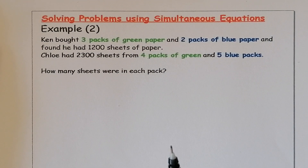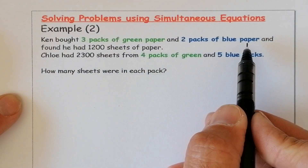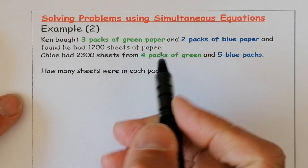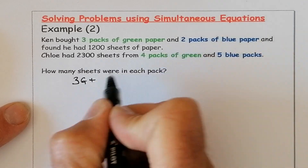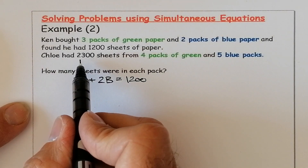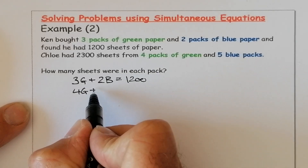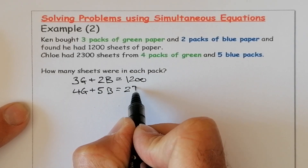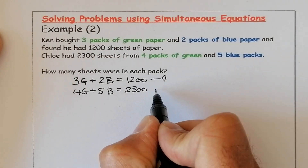Here's the second question — no pictures on this one. We'll work out the equations first, then put them together and solve simultaneously. Ken bought three packs of green paper and two packs of blue paper and found he had 1,200 sheets. So my first equation is 3G plus 2B equals 1,200. The second person had 2,300 sheets from her purchase. So there are two equations made from the wording.